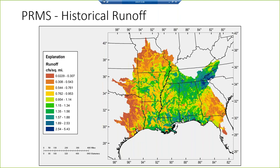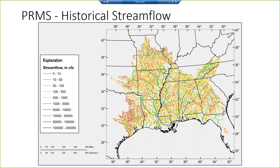Aggregating those runoff values to the stream network — the distinction being runoff from the HRUs versus streamflow in the stream network — this is the aggregation of streamflow across the study area, which makes the larger rivers stand out. This only considers flow within the study area; for the Mississippi, it's not considering anything north of about St. Louis. The ACT and ACF basins in the southeastern U.S. and Tennessee stand out. Some segments have an average of less than 10 cubic feet per second, while the Mississippi is up around 183,000 cubic feet per second.